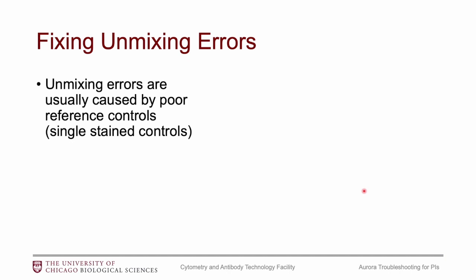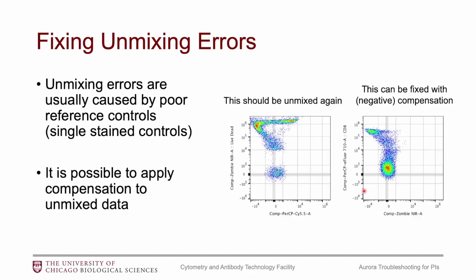To fix unmixing errors long-term, as mentioned, better reference controls lead to better unmixing. If you keep running into problems, think about how the reference controls are being created. If there are only slight unmixing errors, it is possible to apply compensation to the unmixed data to fix it. You check unmixing the same way you check compensation — look at single stains, all n-by-n plot combinations, and hope to draw a straight line between the negative and positive populations. If a plot looks slightly overcompensated — or in spectral terms, slightly overcorrected — applying negative compensation to align the positive population with the negative is perfectly acceptable.